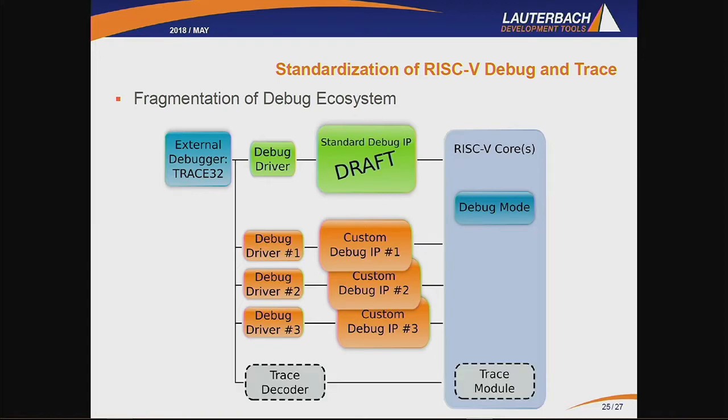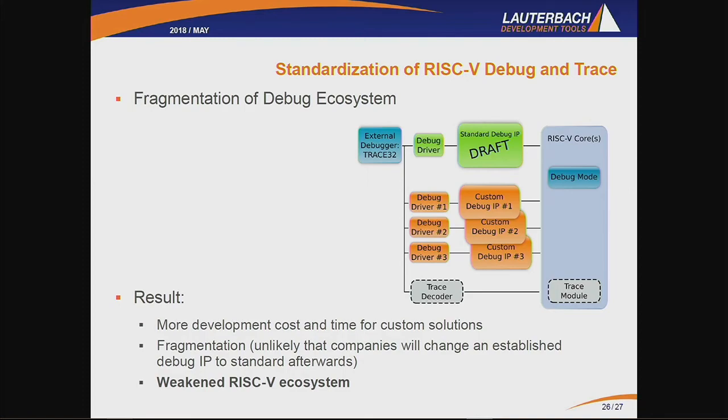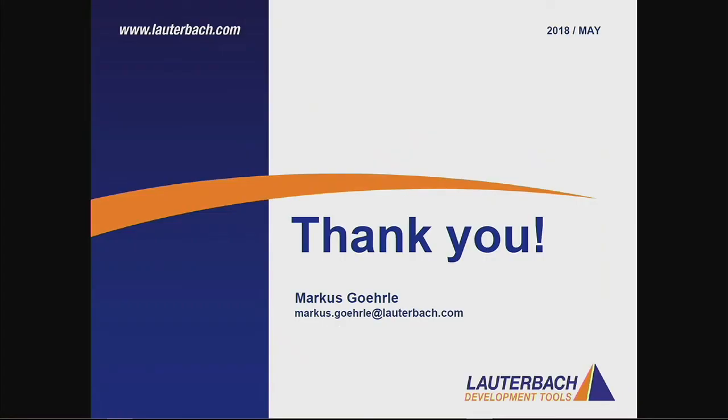The same also applies for trace. The situation there is slightly different because there is no specification even in the making — there is no trace work group, at least as far as I am aware. So people go with custom trace solutions as well, which we are willing to support and are already looking at. In summary, the fragmentation stands in the way of getting a uniform, stable, and well-established debugging system. I would like to encourage people to contribute to the debug specification, provide your inputs whether positive or negative, and work on a strong RISC-V ecosystem. That is it from my side. Thank you for your attention.